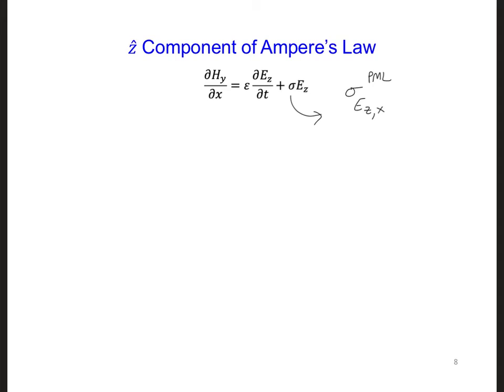So in this case, the left side, we're going to write dhy dx with a tilde over it to indicate that we're now in the frequency domain. And the dddt turns into a j omega e tilde. And now for sigma, we have PML ezx and e tilde z.